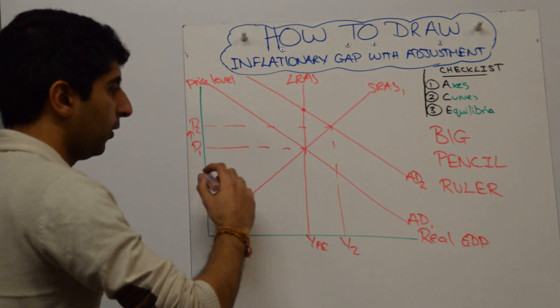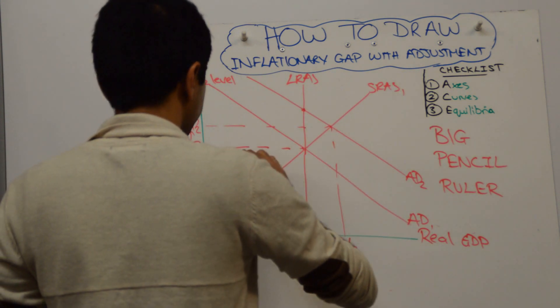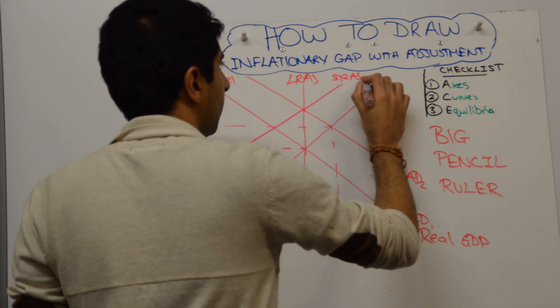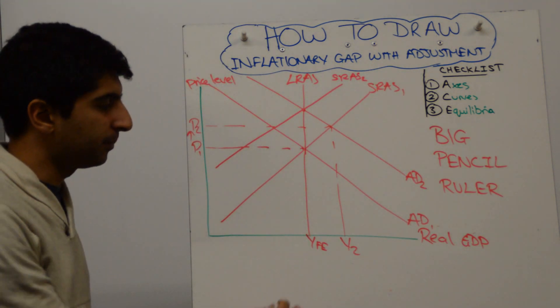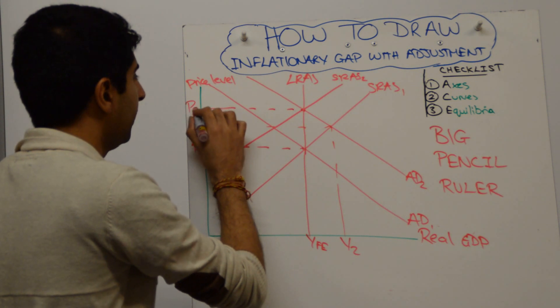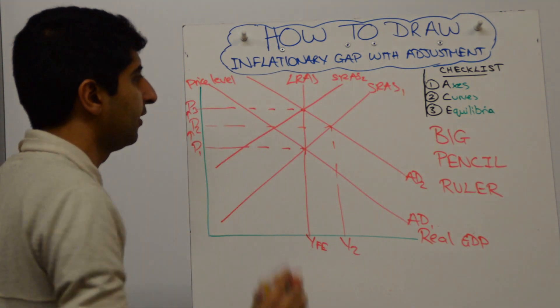With a ruler, this is very easy to do. But that's pretty good with a ruler. So, that shift there takes us back to the full employment level of output with higher inflation once more, up to P3.